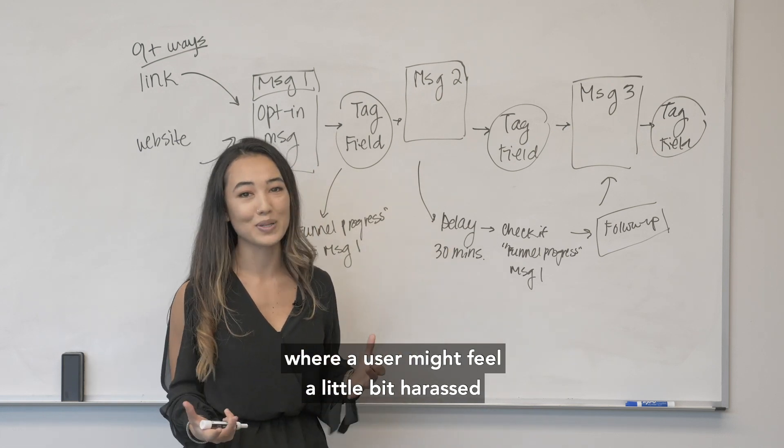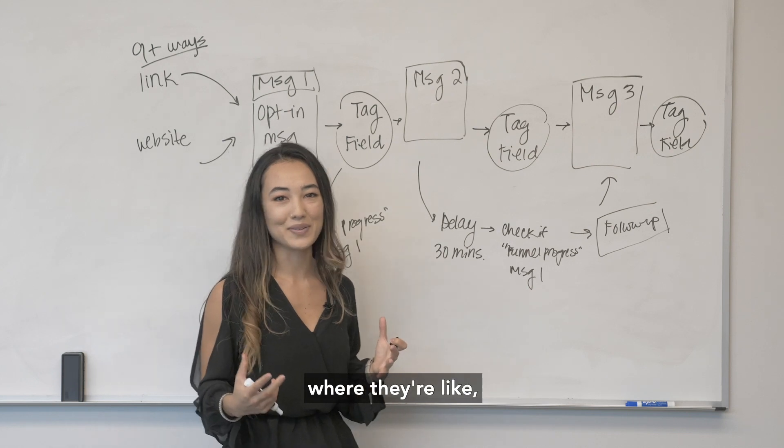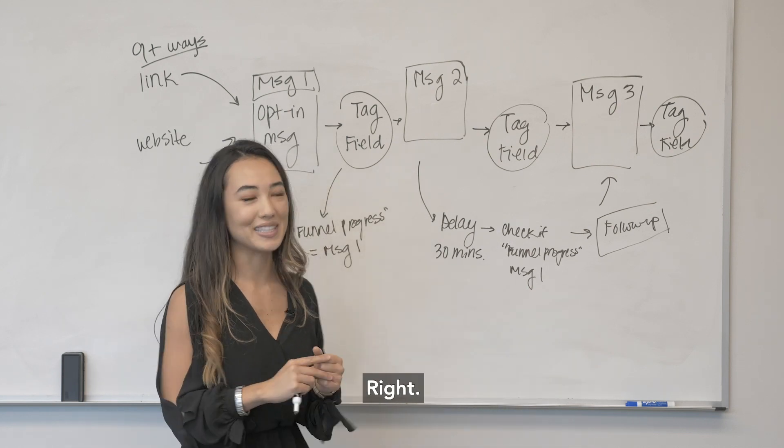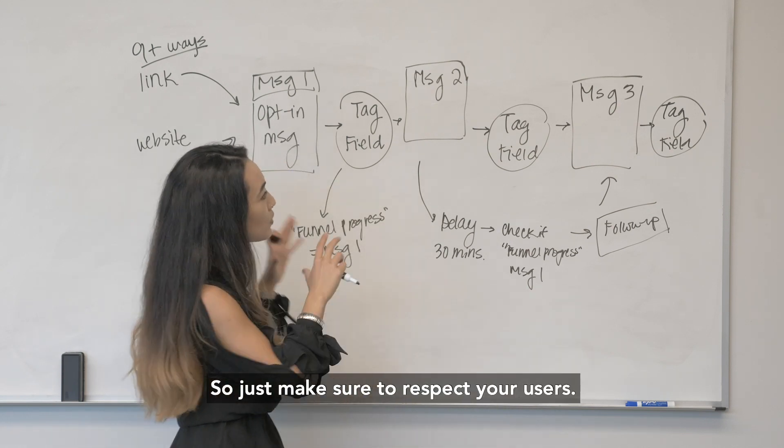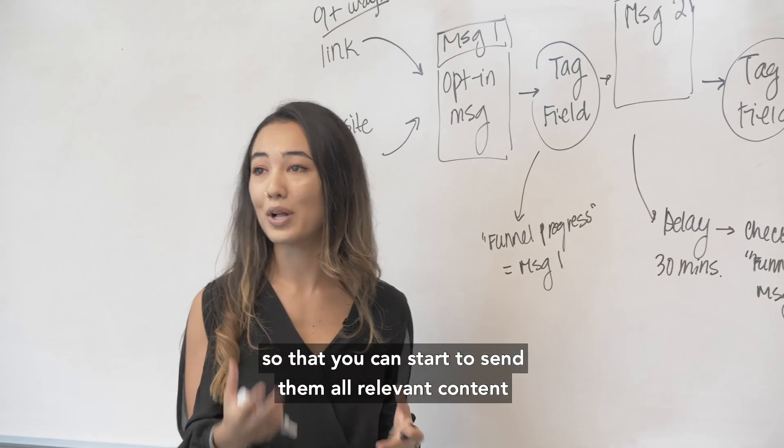Usually after seven questions it's a little bit much where a user might feel harassed or kind of like invasion of privacy where they're like okay how much information do you really need from me. So just make sure to respect your users but also get enough information so that you can start to send them relevant content and also help them in the best way possible.